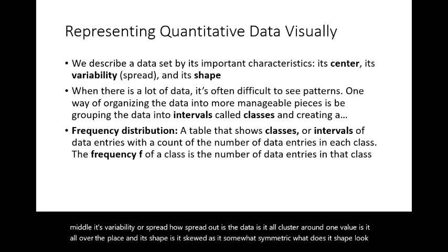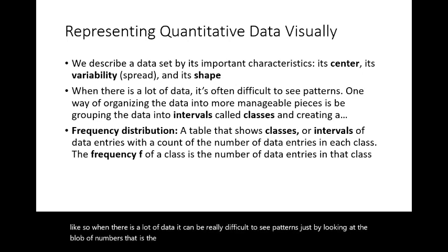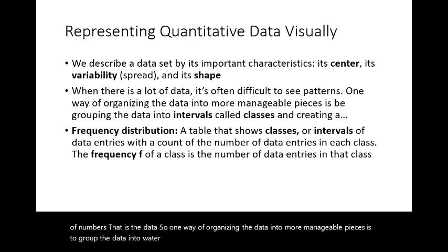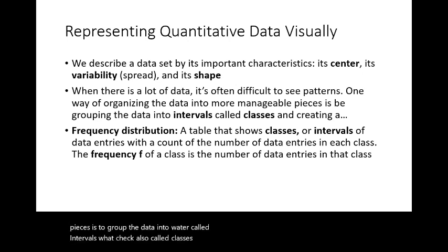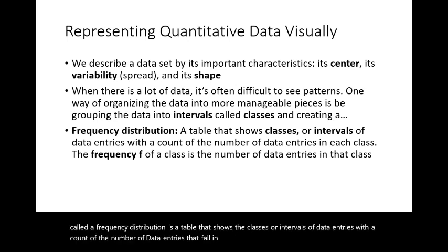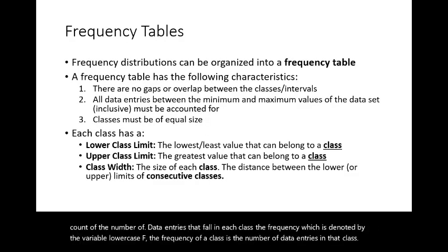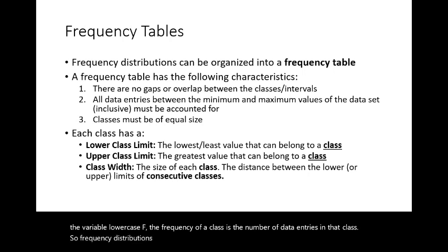When there is a lot of data, it can be really difficult to see patterns just by looking at the blob of numbers. One way of organizing the data into more manageable pieces is to group the data into what are called intervals, also called classes. By grouping data into classes, you create a frequency distribution — a table that shows the classes with a count of the number of data entries in each class, called the frequency, denoted by lowercase f.